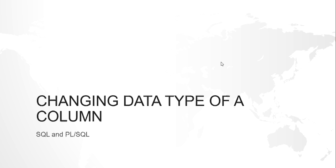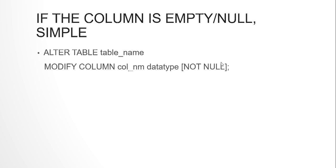This is Krishan and this video is on changing the data type of a column. Every now and then we come across scenarios where we have to modify the data type of a column in a table. To do this, Oracle has given a very simple syntax called ALTER TABLE table_name MODIFY column_name and the new data type. But this is allowed only when changing the data type in a column which doesn't contain any data.